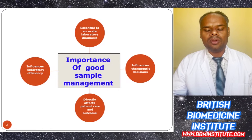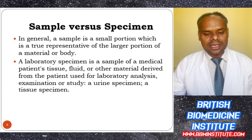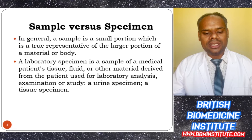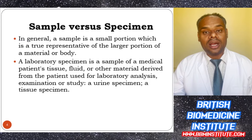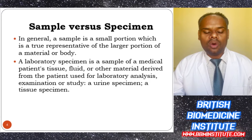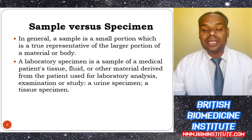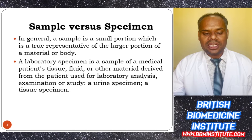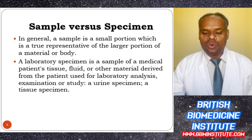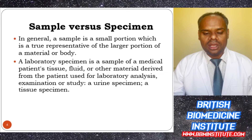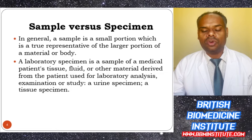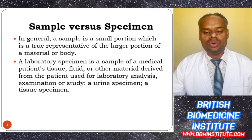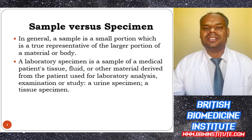Now, sample versus specimen: in general, a sample is a small portion which is a true representative of a large portion of material or a body. Whereas a laboratory specimen is a sample of a medical patient's tissue, fluid, or other material derived from the patient, used for laboratory analysis, examination, or study — like urine specimens or tissue specimens.